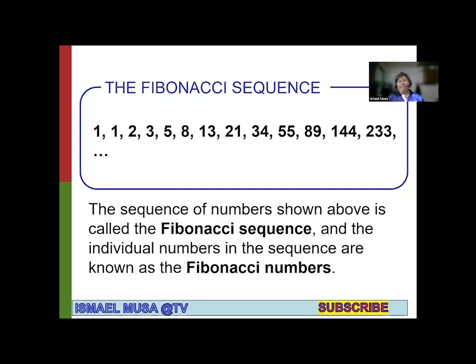You will notice that of these numbers, only 1 and 144 are perfect squares. Now, the numbers in this sequence are called Fibonacci numbers.